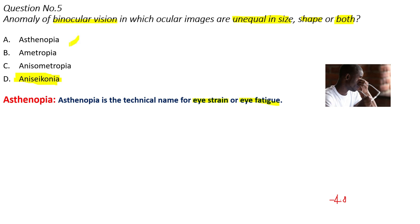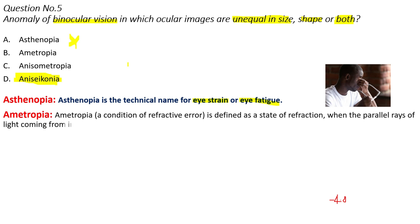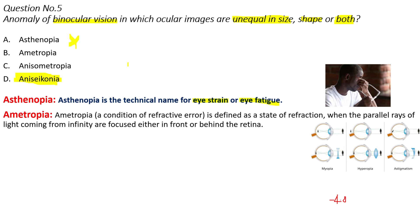Coming to Option B: Ametropia. This is an eye condition in which parallel rays of light coming from infinity, when accommodation is at rest, do not focus on the retina — they focus in front of or behind the retina. Myopia, hypermetropia, and astigmatism are considered under ametropia. So Option B is also not the correct answer.